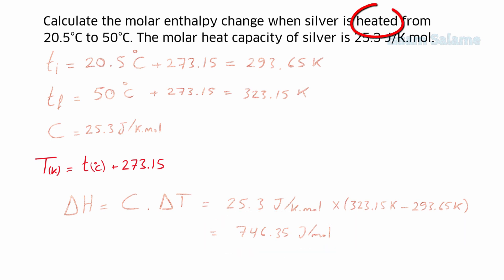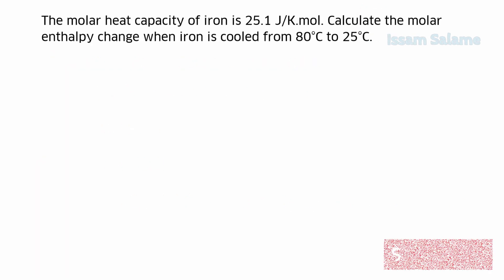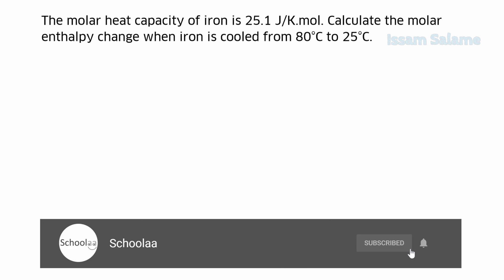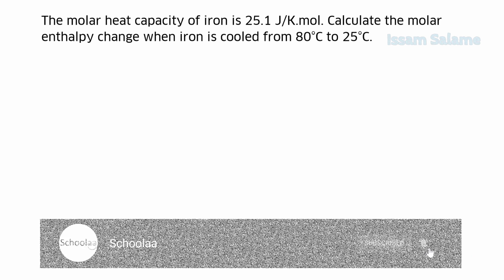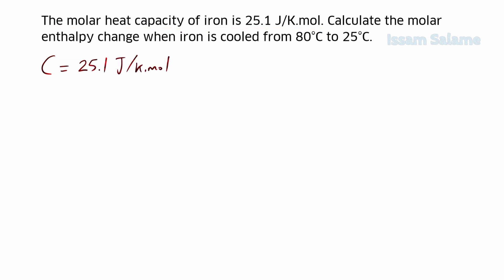Notice that the value is positive, which is something you'll see more of in the next exercise. The molar enthalpy change during heating is positive. For the next exercise: the molar heat capacity of iron is 25.1 joules per Kelvin·mole. Calculate the molar enthalpy change when iron is cooled from 80°C to 25°C. We write the given: molar heat capacity of iron is 25.1, initial temperature is 80°C, final temperature is 25°C.